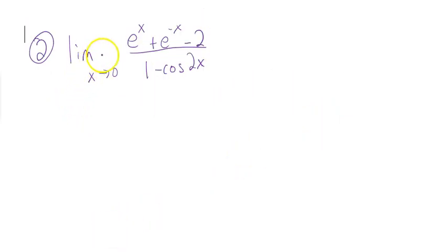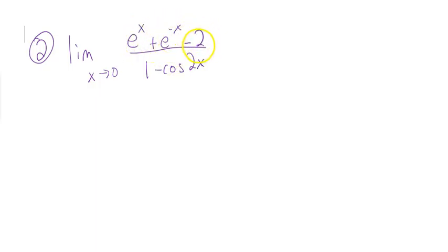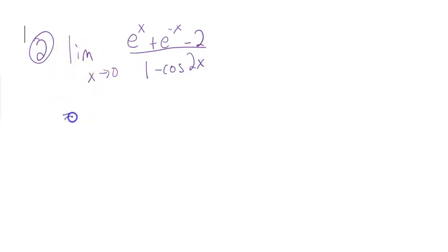For my second example, again if we plug in 0, we get e to the 0. Anything to the 0 power is 1, so I get 2 minus 2 on top — I get a 0. And if I plug in 0 on the bottom, I get 1 minus 1, which is 0. So it is an indeterminate form and I can use L'Hôpital's rule. I'm going to put equals with my little L apostrophe.